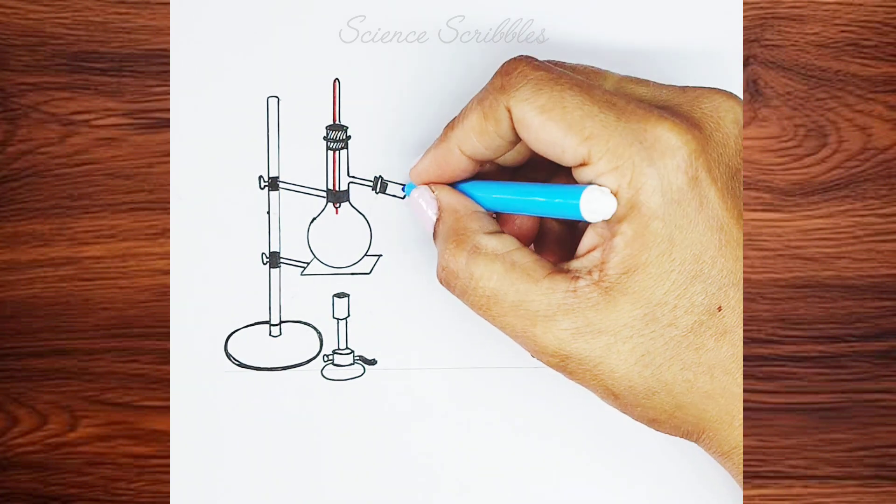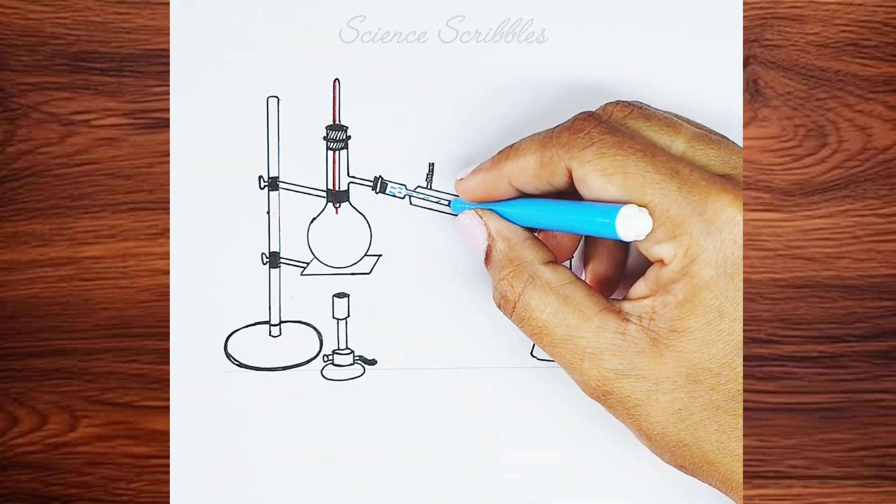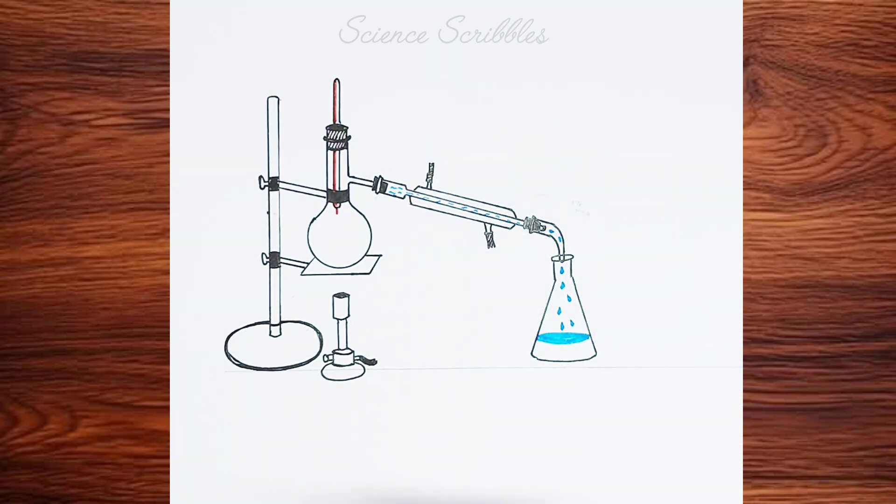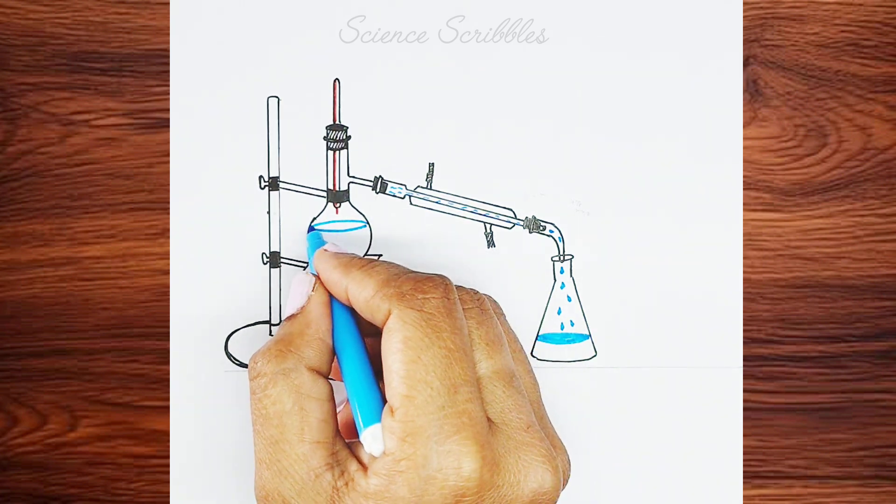Finally, let's draw the steam, as it is through the steam that the condensation process occurs. The steam turns into water vapor, which then condenses and settles in the conical flask as distilled water.